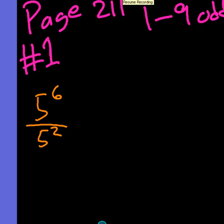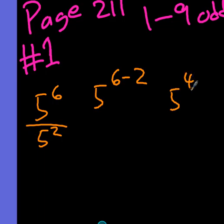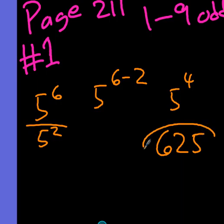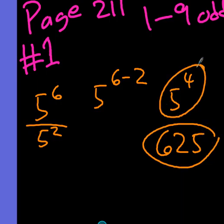This is from section 75, page 211. We're working with division or quotients here. So five to the sixth divided by five squared. We're just going to follow the basic rule that says take the exponents and subtract. So five to the sixth minus two, or five to the fourth.